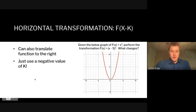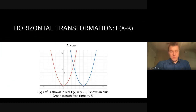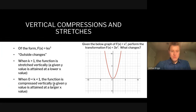One more transformation: what would happen if you subtracted five on the inside? Subtracting on the inside of the operation translates the function to the right. The original function is shown in red and the new function in blue — we shifted it exactly five to the right, which is what we expected, and you can see the shapes are still exactly the same.